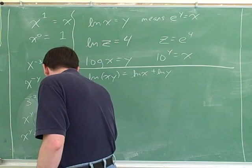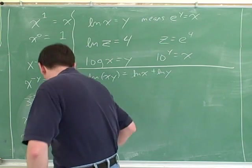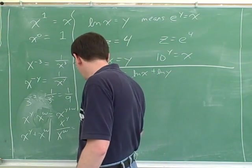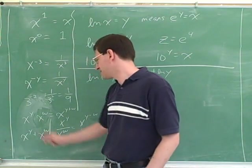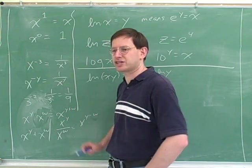So how about if we have x to the y over x to the w? How could I rewrite that? x to the y minus w. That's kind of logical, because this is multiplication is kind of similar to division. Addition is kind of a counterpart to subtraction.